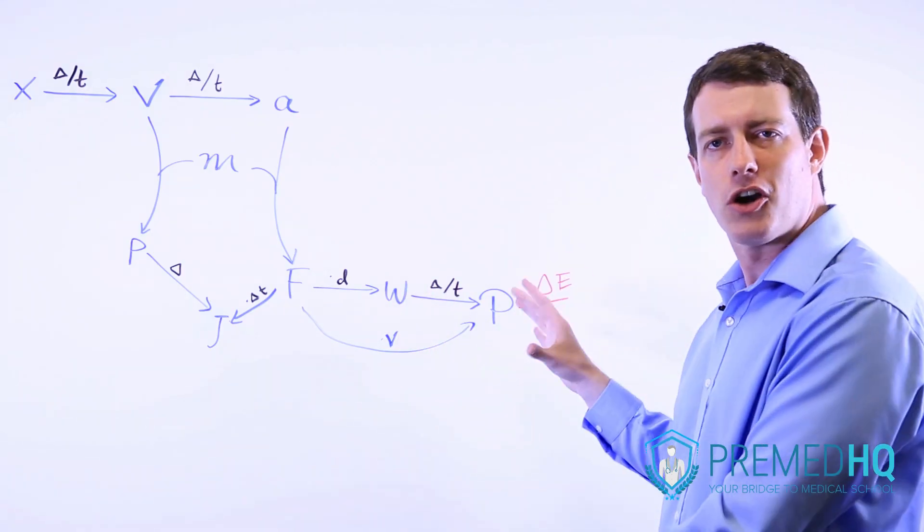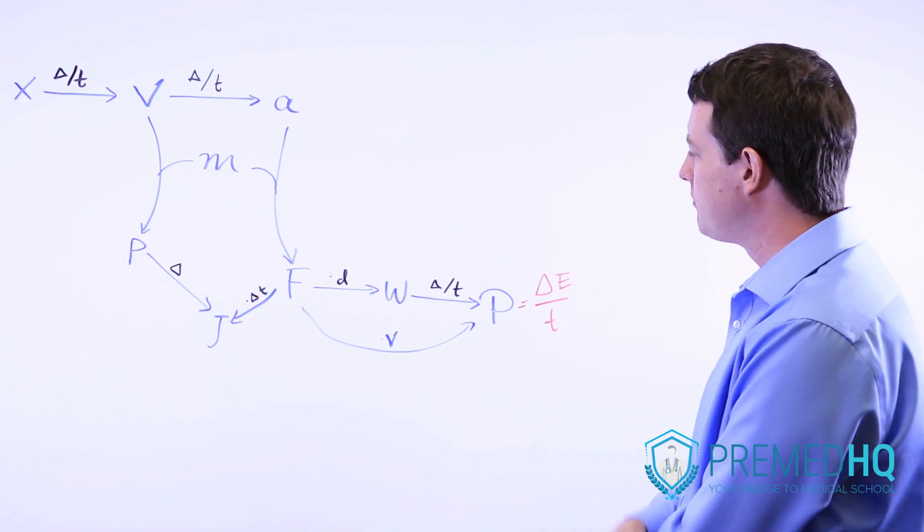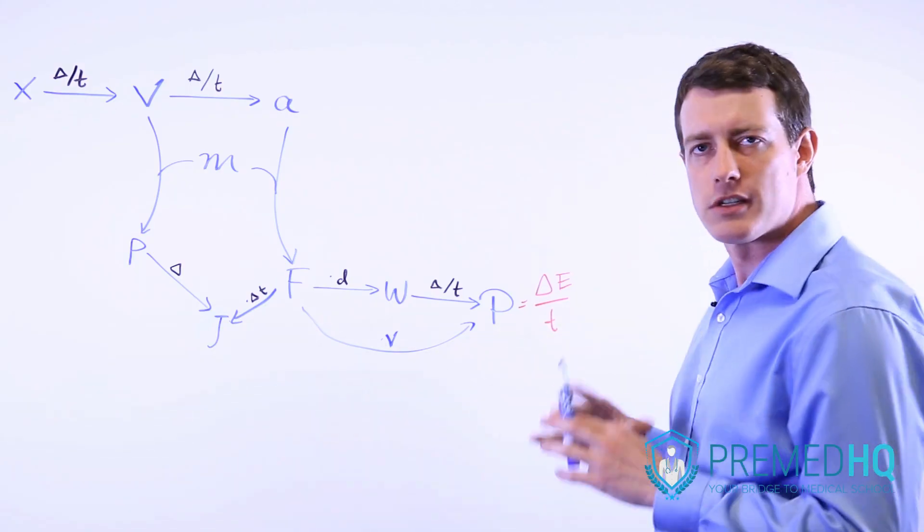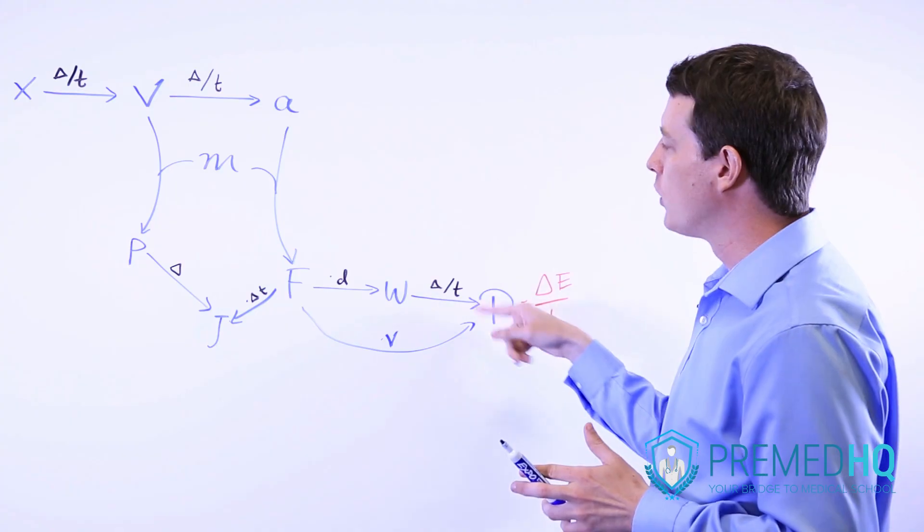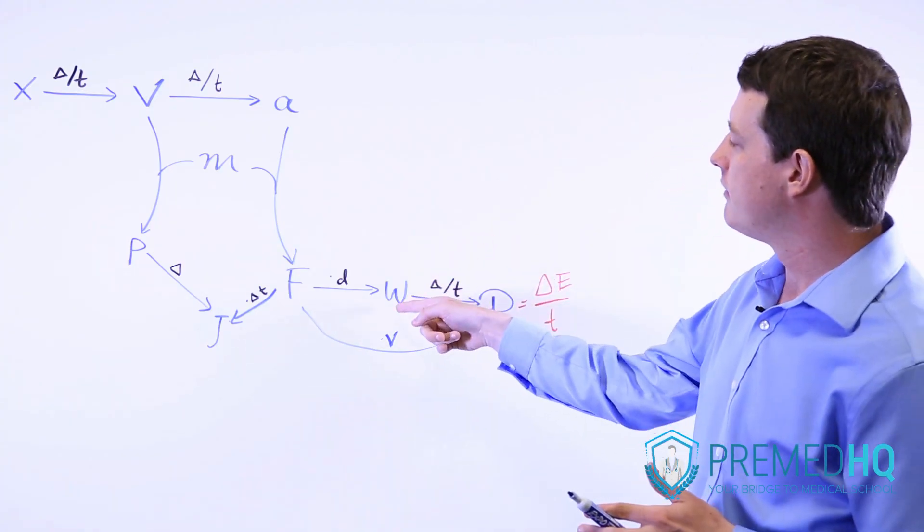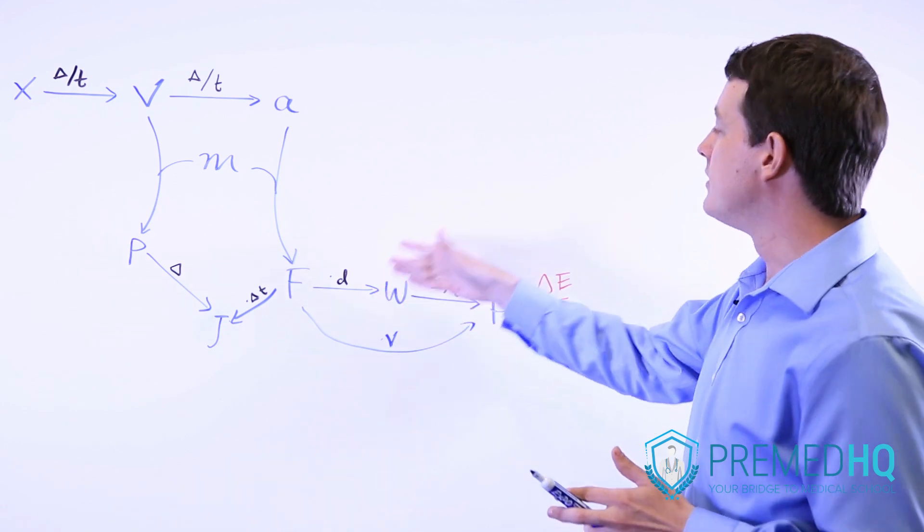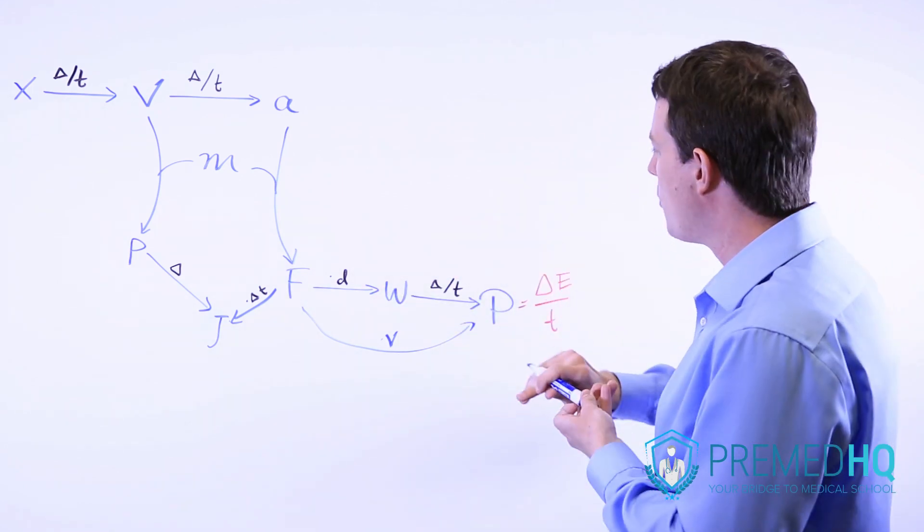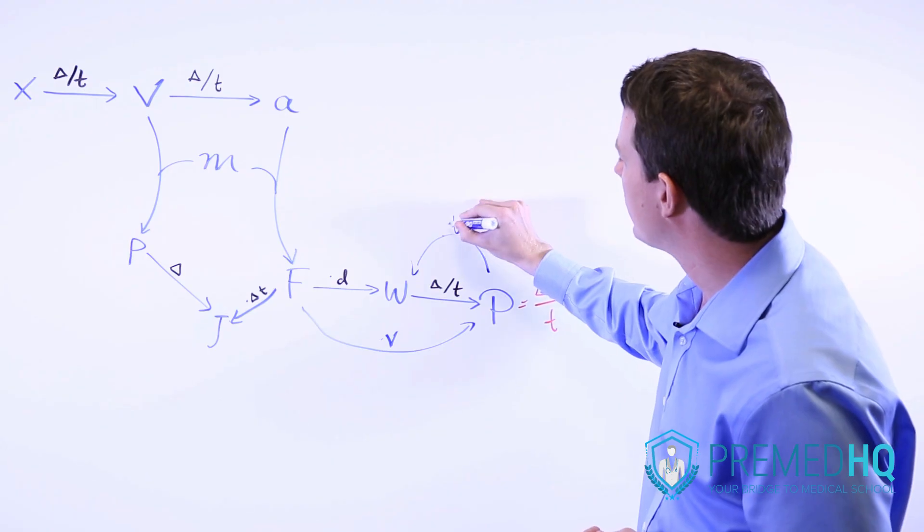Also realize that this chart works backwards as well. For example, if you know the power that is created by something and you have the power working over a certain period of time, whereas we went from work to power by dividing by time, we can go back this way by multiplying by time. Power times time will give you the amount of work that is performed.